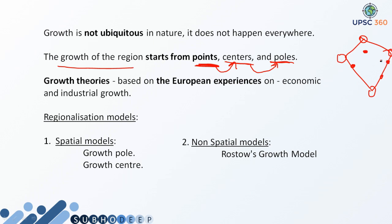Initially, Kolkata was not developed, neither Bombay was developed, nor Chennai was developed, nor Delhi was developed. There was a source which started development in these regions. Take the example of the British. When the British came, they were making ports here because they had to export raw materials to their countries. So they started developing these regions — Mumbai, Chennai, Kolkata. That initial development is what is called a growth point.